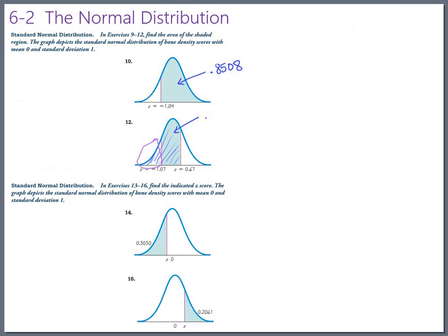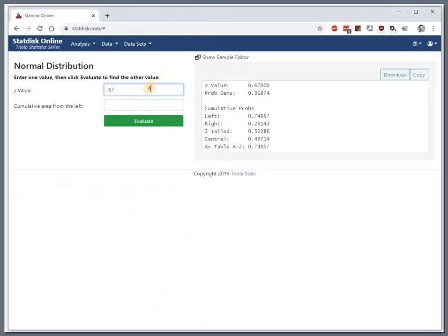Oops, blue, let's go back to blue. So 0.7486. And then we need to subtract from that the area I shaded in purple. So 1.07, negative 1.07. Negative 1.07. That area to the left is 0.1423.